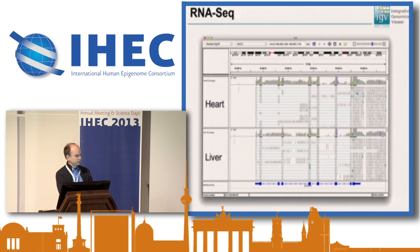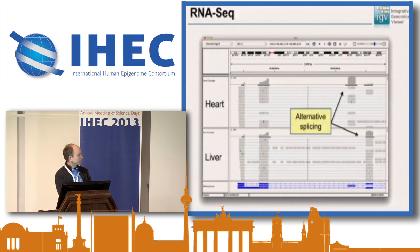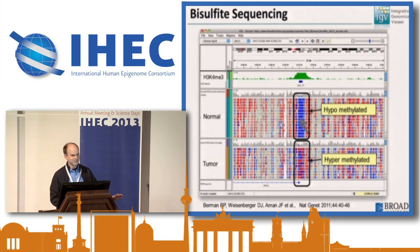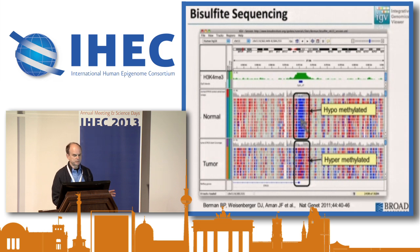RNA-seq is similar but has a different look because of all the splicing going on — this is heart and liver from BodyMap data. One thing you can see in RNA that you can't in DNA is alternative splicing, illustrated here between these two samples. Finally, bisulfite sequencing. IGV has a special coloring mode which understands the C-to-T conversion, so you don't have a false impression of many SNPs. The red and blue show individual base information — the raw data of where a C or T was expected. You can also set it for different contexts beyond CpG, such as for plants.